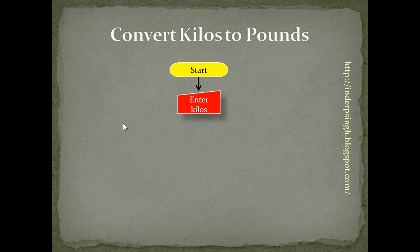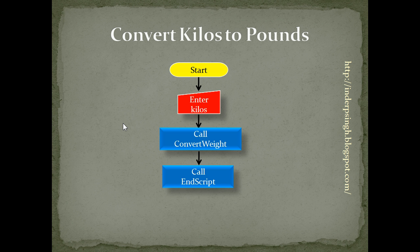Now we are going to see an example of procedures — both the sub-procedure and the function procedure — and here is the flowchart for the script. We want to convert kilograms to pounds. First, the user enters the weight in kilograms, then there is a call to the procedure named ConvertWeight. ConvertWeight requires an argument which is the number of kilos to convert to pounds. Then there is a call to another procedure, EndScript, which does some messaging to the user and then stops.